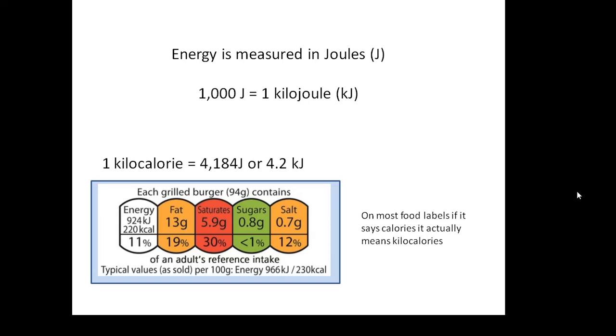If you look at food labels, they will tell you how many kilojoules of energy or how many kilocalories of energy it contains. One confusing thing is that on most food labels, it actually just says calories. If it says calories, then it actually means kilocalories. If it says this biscuit is 250 calories, it means kilocalories.